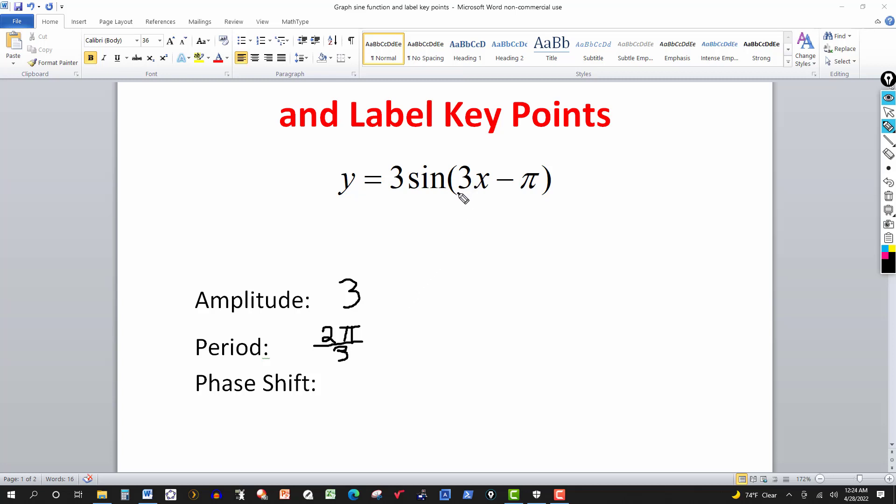The phase shift, one way to do it is just take this and set it equal to 0 and solve it. 3x minus pi is equal to 0, so 3x will equal pi, divide by 3, x will equal pi over 3. So everything shifts over pi over 3 units.